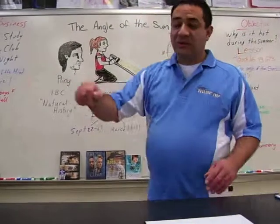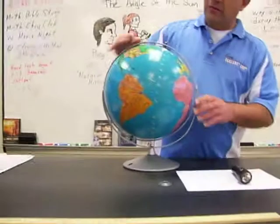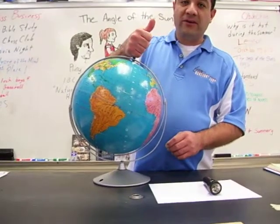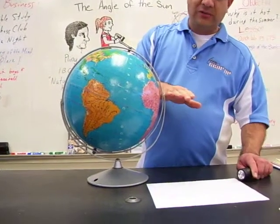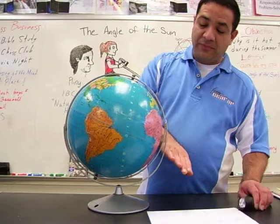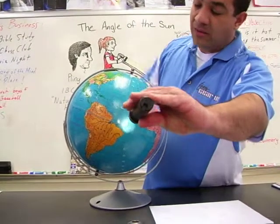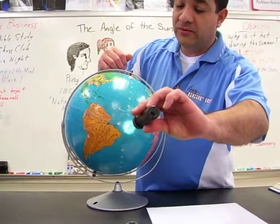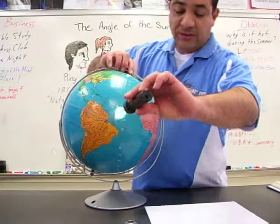To demonstrate this, we have a globe pointing at a 23.5 degree tilt. Notice that the equator at this point isn't right in the middle, but rather down here, much farther south, and it's tilted up. If the sun were here in the middle, both the Northern and Southern Hemisphere would experience the same amount of sunlight. This would be the spring equinox.